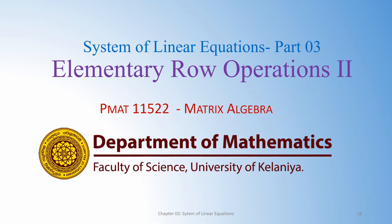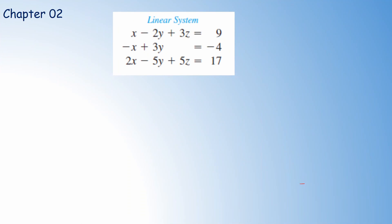This is the third video lesson on systems of linear equations. Today we continue the discussion on elementary row operations under matrix algebra. In the previous lessons we introduced three row operations: multiplying a row by a non-zero constant, adding a multiple of one row into another row, and interchanging two rows. Here we are going to discuss how to apply row operations in order to solve a given linear system.